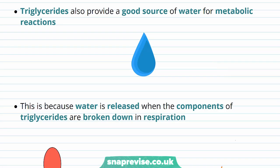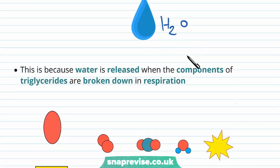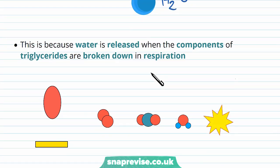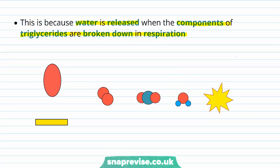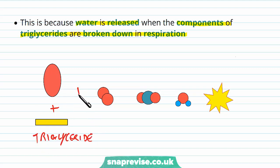Triglycerides also provide a good source of water, and water is used in many metabolic reactions — hydration being very important in all cells of the body. The water comes from the breakdown of triglyceride components during respiration. Looking back at the respiration equation, one of the waste products formed when triglyceride components are broken down is water, which can then be used to carry out other metabolic processes or to hydrate the body.